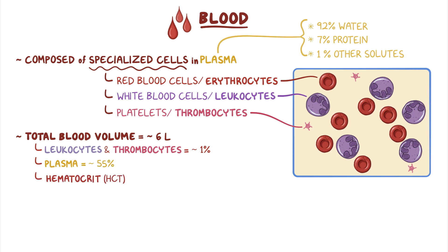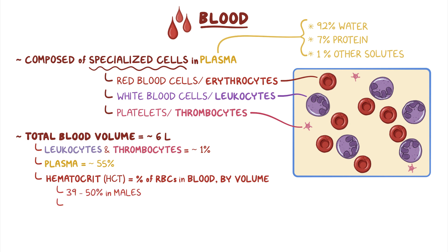Hematocrit, or HCT for short, is the percent of packed red blood cells or RBCs in blood by volume. Normally, the hematocrit is between 39% to 50% in males and 35% to 45% in females.